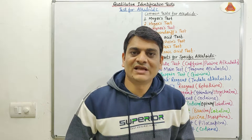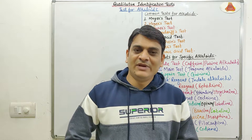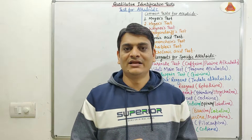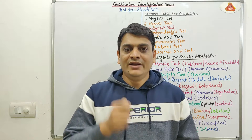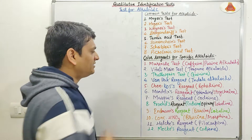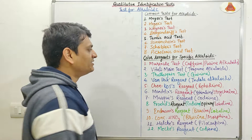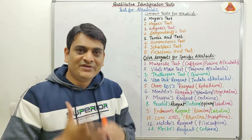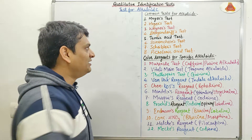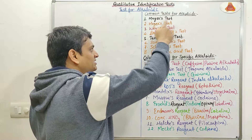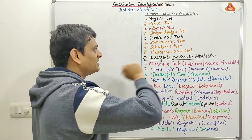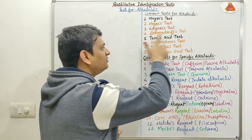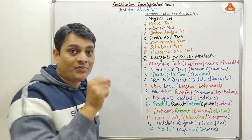Hello friends. In this video series I am going to explain about qualitative identification tests for alkaloids. These are some common tests for alkaloids and some specific tests. In my previous videos I have already discussed the details about Mayer's test, Hager's test, and Wagner's test. Now in this video I am going to explain about Dragendorff's test.